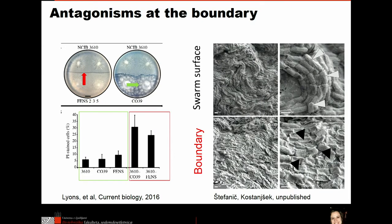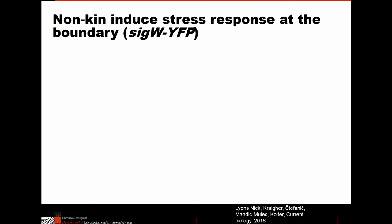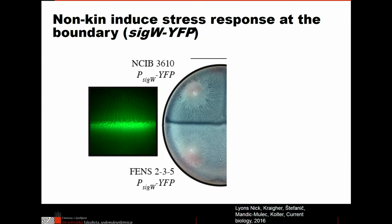This correlates with transcriptional activities tested within the boundary. One example is the expression of the sigma W gene between two non-kin strains when they interact. Sigma W is a sigma factor responsible for adaptation to stress at the envelope level. You can see very high induction of sigma W in one strain, while the other doesn't change its genes much — suggesting one is attacking and the other is responding to the attack.